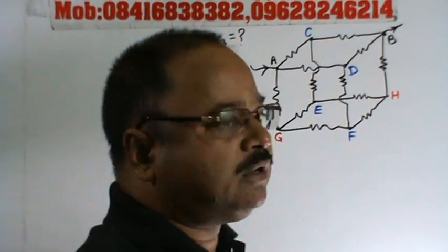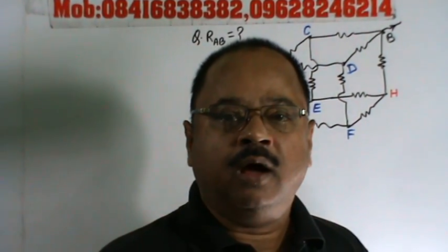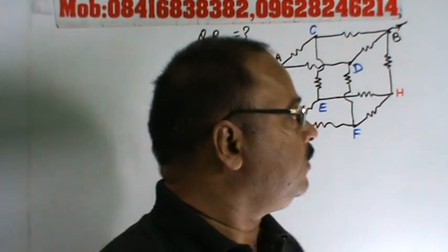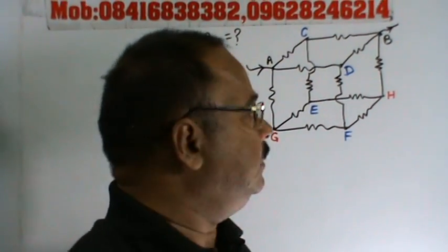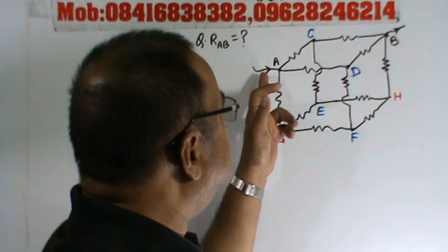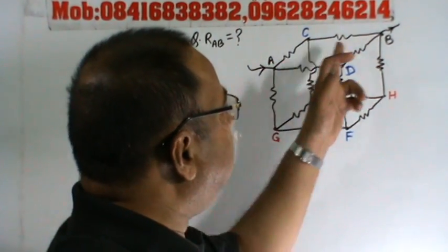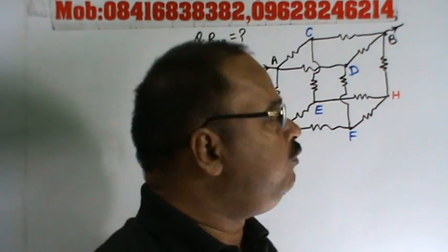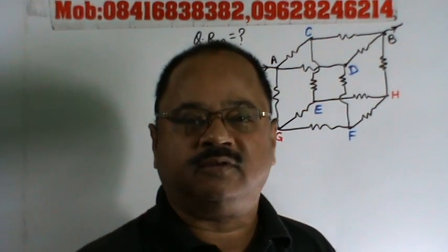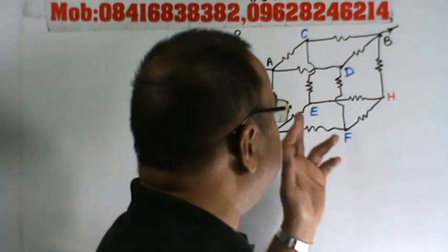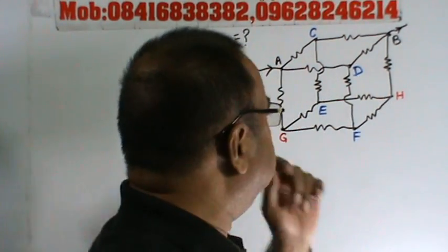So here also, let us see how these resistances are actually connected. The current is entering at A and reaching at B. In the previous problem, we talked about the symmetry of resistances — the electrical symmetry of the resistances — and how these resistances are connected.